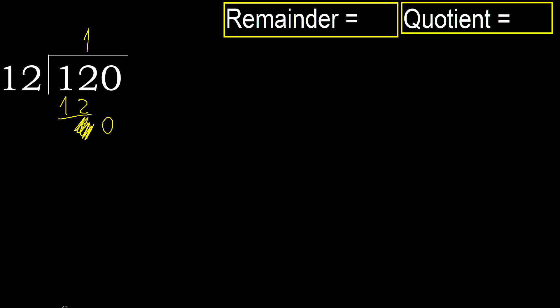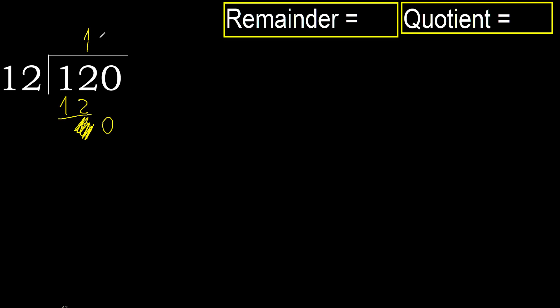Eliminate the 0 on this side. 0 is less, therefore next — that is not a number, therefore finish it. Always complete with 0 — complete because here we finish with this number. Therefore, 120 divided by 12 is 10.